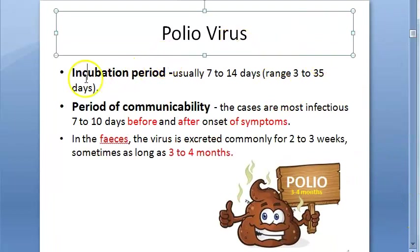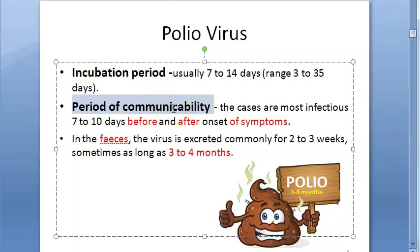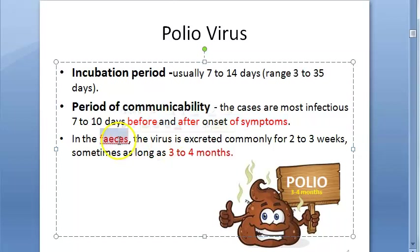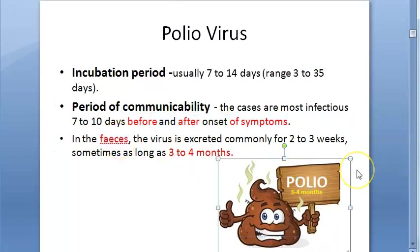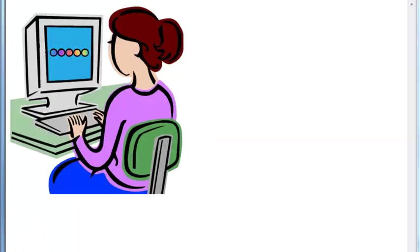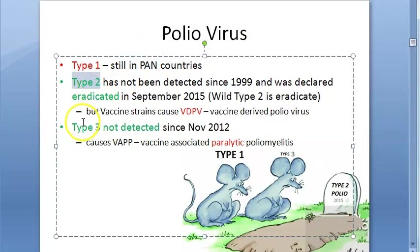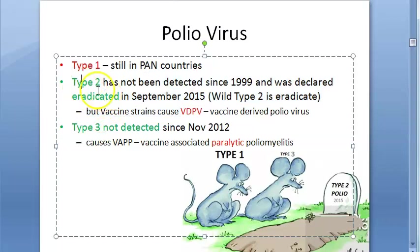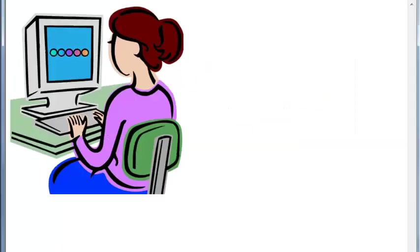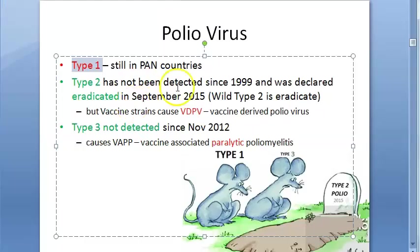The virus has an incubation period and a period of communicability before and after onset of symptoms. The feces especially can harbor the virus for up to months. There are three types of poliovirus: type 1, type 2, and type 3. Type 2 wild poliovirus is eradicated, though it still exists in vaccines as vaccine-derived poliovirus. Type 3 is not detected. The key one to remember is type 1.